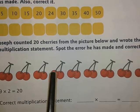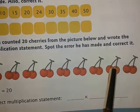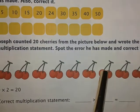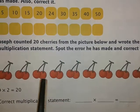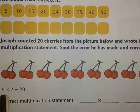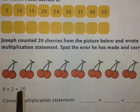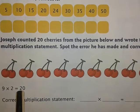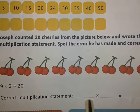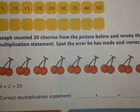Counting the groups: 1, 2, 3, 4, 5, 6, 7, 8, 9. Then this much he has done correct — there are 9 groups and he wrote it as 9 into 2. But is 9 into 2 equal to 20? Then you have to write it correctly in the next line.